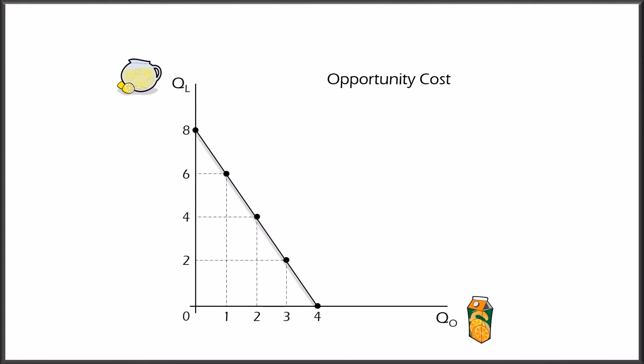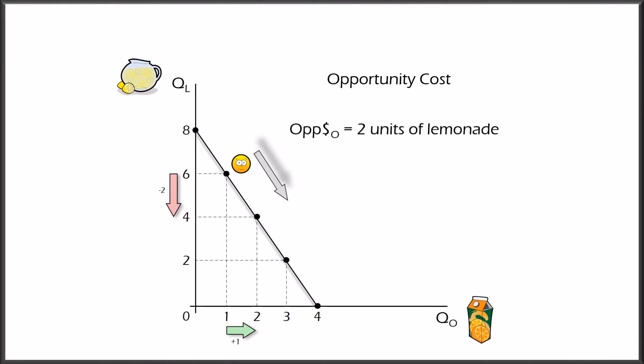As an individual chooses to consume more of one product, they lose the opportunity to consume units of the other product. Let's assume this individual initially chooses one unit of orange juice and six units of lemonade. If they decide to consume one more unit of orange juice, an opportunity cost will arise. Ceteris Paribus, buying one more unit of orange juice results in losing two units of lemonade. So the opportunity cost of one unit of orange juice equals two units of lemonade. This is also equal to the price of orange juice divided by the price of lemonade — the same as the slope of this line. Since the CPC is a straight line, the opportunity cost is constant along the whole line.